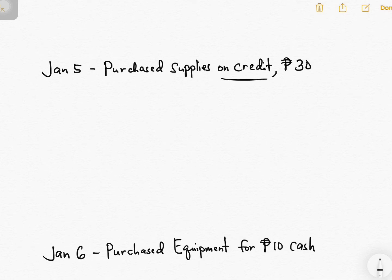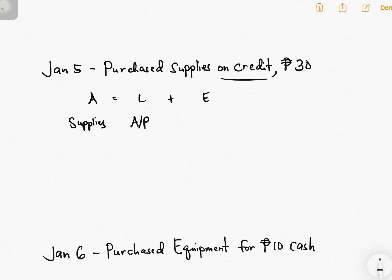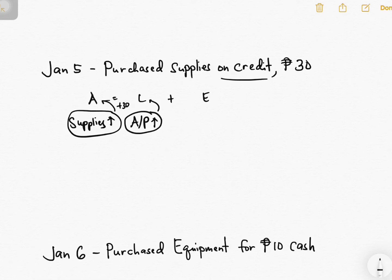Next: purchase supplies on credit. 'On credit' is the same as 'on account,' but here you are the buyer. You received supplies, so under assets you use supplies. Since the problem says 'on credit,' you have not paid yet — so instead of recognizing cash for payment, you recognize accounts payable under liabilities. Supplies increase because you received them, and your obligation — accounts payable — also increased. Supplies increasing raises assets by 30, and accounts payable increasing raises liabilities by 30. The accounting equation remains balanced.